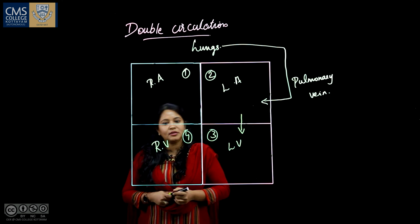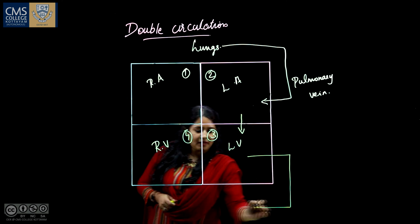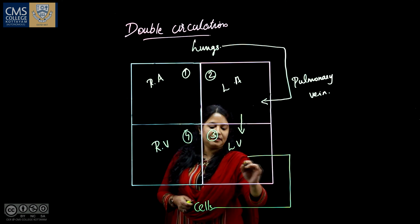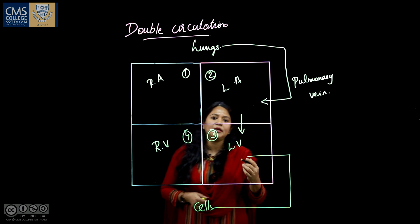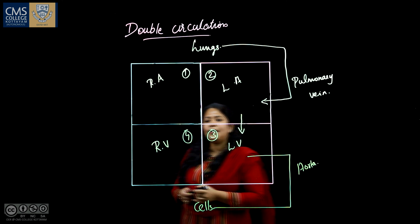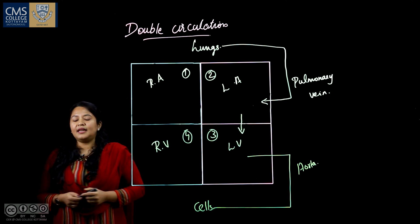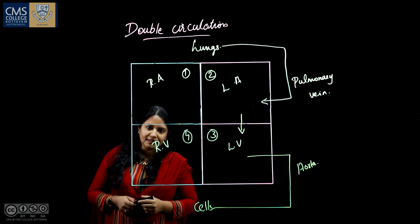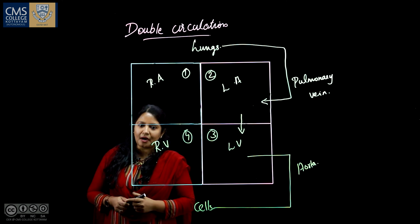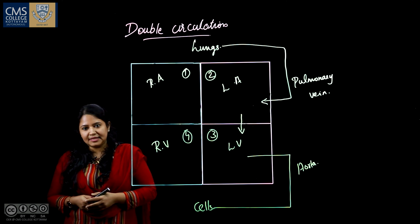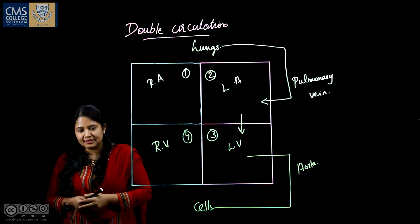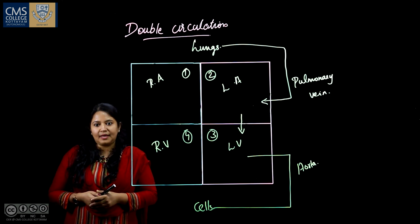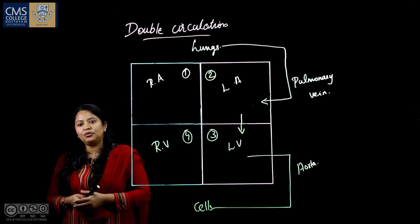From the left atrium, this oxygenated blood moves down to the left ventricle, and from the left ventricle it goes out of the heart to the different parts of the body. This oxygenated blood is carried by another blood vessel called the aorta, which is considered the largest blood vessel in our body. The aorta carries oxygenated blood from the left ventricle to the different parts of the body, entering into different cells through minute blood vessels called capillaries.